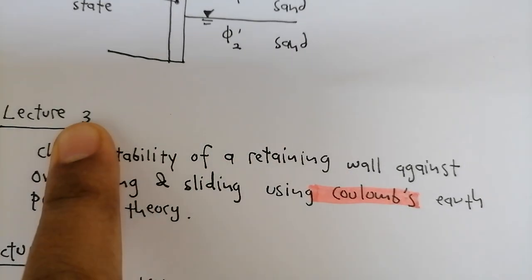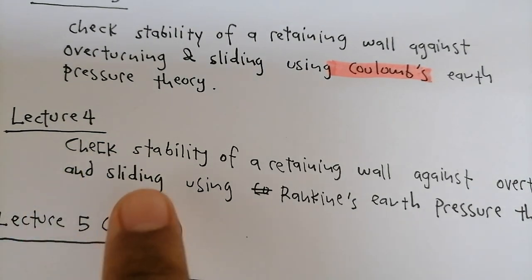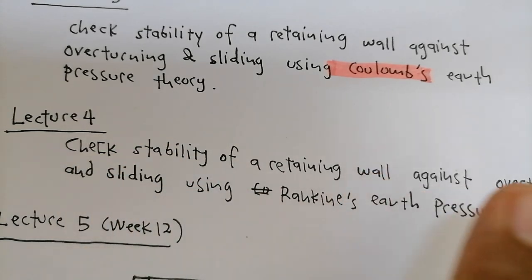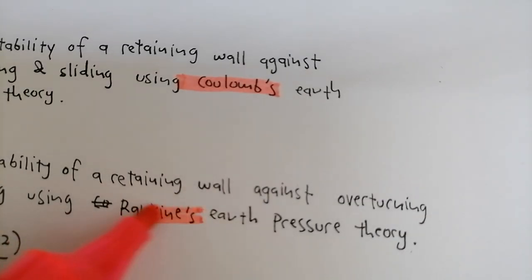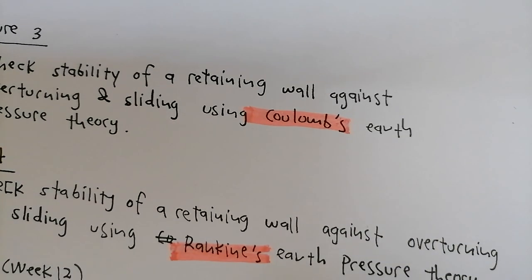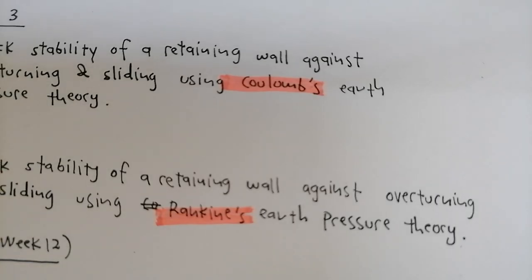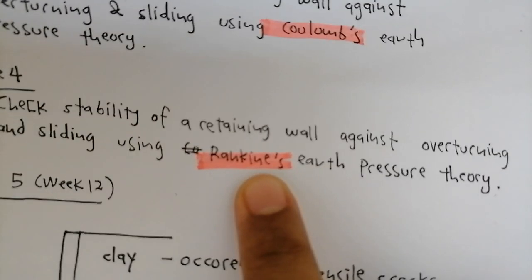In Lecture Session 4, we again checked the stability of the retaining wall against overturning and sliding, but this time we used Rankine. So hopefully by now you can differentiate — if you design using Coulomb theory, how is it done? And if you design using Rankine theory, how is it done?